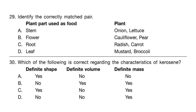Question 29. Identify the correctly matched pair. The correct answer is Option C: root of the plant is reddish carrot.